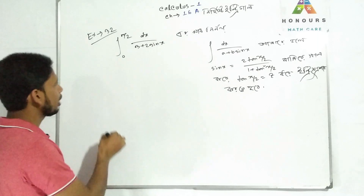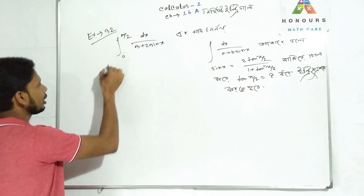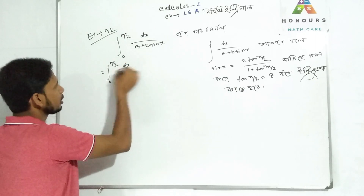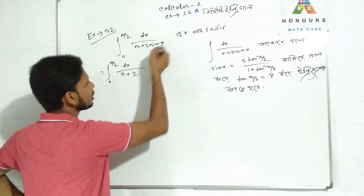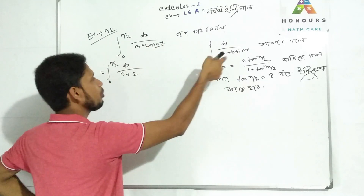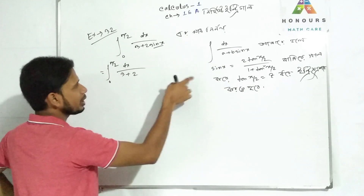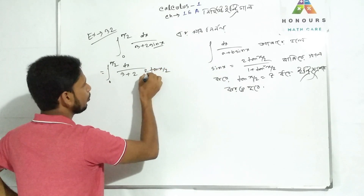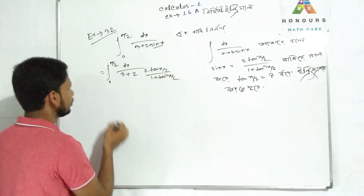So now we have the integral from 0 to π/2, dx divided by 3 plus 2 sin x. We use the identity: sin x equals 2 tan(x/2) divided by 1 plus tan squared(x/2), giving us a plus b sin x form.